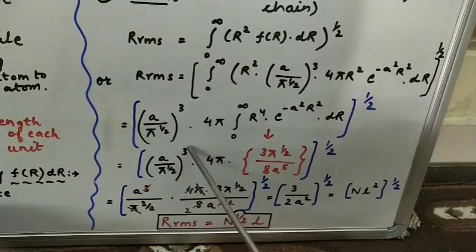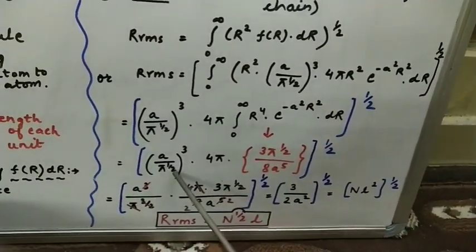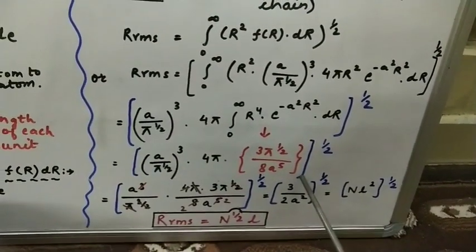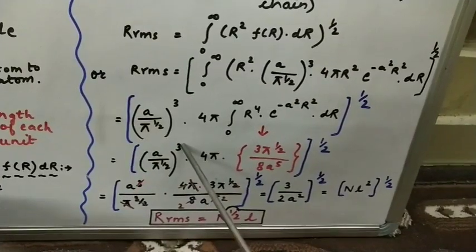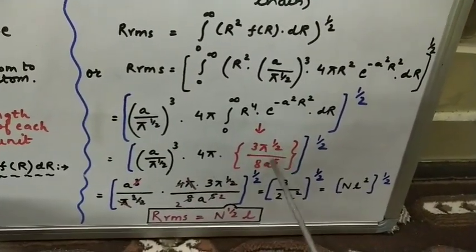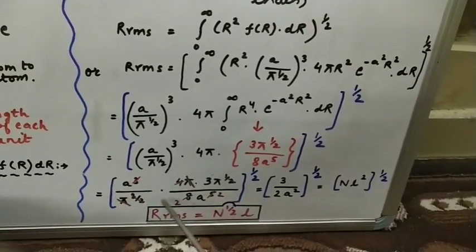Now if we see that is a³ upon π to the power 3 by 2. This 3 is here ahead. Right now we are not solving the blue square bracket. We are just talking about this a³ upon π to the power 3 by 2, 4π, 3π½, 8a⁵. We will solve this overall. So we get 3 upon 2a² to the power half.